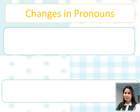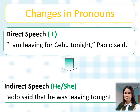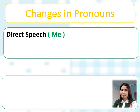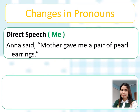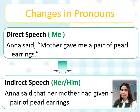Let's have some examples. For the pronoun I: "I am leaving for Cebu tonight," Paolo said. From I, we change it to he because of Paolo. So: Paolo said that he was leaving tonight. For the object pronoun me: Anna said, "Mother gave me a pair of pearl earrings." When we convert it into reported speech, it becomes: Anna said that her mother had given her a pair of pearl earrings. The object pronoun me becomes her in reported speech.